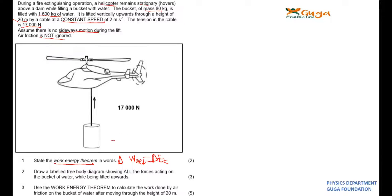The net work done, let me write it here. The net work done is equal to the change in the object's kinetic energy. Okay.